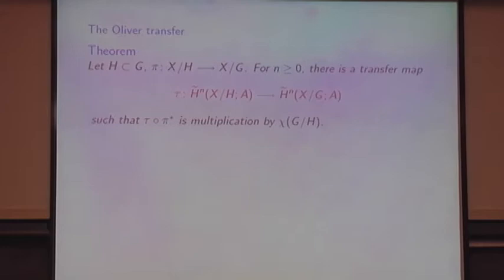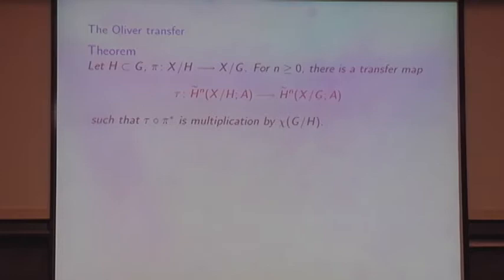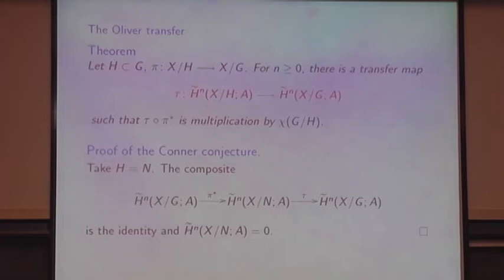For that, we want the Oliver transfer. The claim is that for a subgroup H of G, you consider the projection, and there is a transfer map in cohomology going the other way which, when composed with pi star, is multiplication by the Euler characteristic. Suppose you've got such a transfer. Then you've got the Conner conjecture: you just take H to be N, and the composite is the identity. Since we know the cohomology of X mod N is zero, that's zero. And that's the end of the proof. So we have to figure out how to get a transfer map like that.